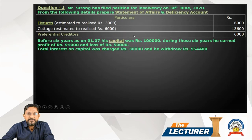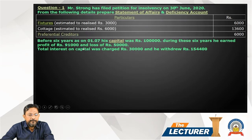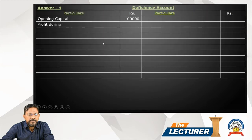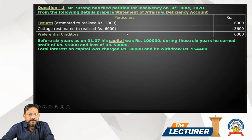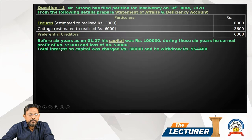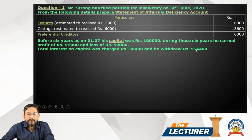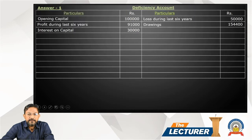When we prepare the deficiency account, capital-related entries go first. Opening capital of one lakh goes on the left-hand side. Profit during the last six years — 91,000 — goes on the left-hand side. Loss during the last six years — 50,000 — goes on the right-hand side. Interest on capital 30,000 goes on the left-hand side as an addition to capital. Drawings 1,54,000 go on the right-hand side.